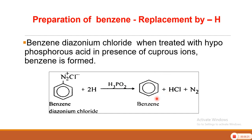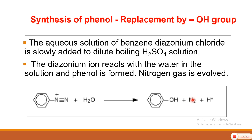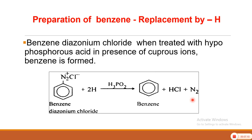Benzene is directly available, but if you are interested you can carry out this reaction. Benzene Diazonium Chloride, when treated with hypophosphorous acid in the presence of cuprous ions, gives benzene. The catalyst used is hypophosphorous acid with cuprous ions. In all these replacement reactions, nitrogen gas is definitely evolved. For getting benzene, you treat the Benzene Diazonium Chloride with hypophosphorous acid in the presence of cuprous ions.